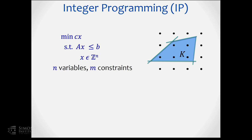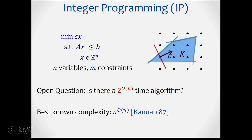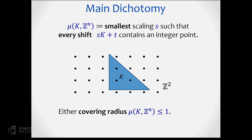Integer programming is a classic problem. We want to minimize over the integer points inside a polytope. The big open question, at least from the perspective of this talk, is: can we solve this in singly exponential time? There is an n to the order n time algorithm for this, due to Kanan. Here I'm just going to try and find a feasible integer point, not maximize, but it's not much different.